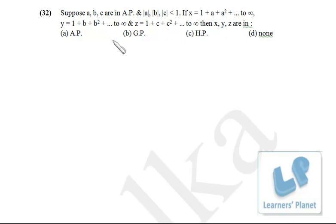Then x, y, z are in maybe AP, GP or HP. See here, x is equal to what? 1 upon 1-a. That is first term upon 1 minus common ratio. Similarly y is equal to 1 upon 1-b and z is equal to 1 upon 1-c.